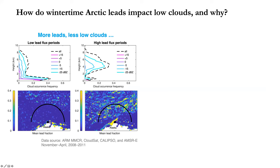We focus on a region north of Alaska to answer the key question: how do wintertime leads impact low-level clouds and why? Key observational results show that for the high-lead group, we observe less low-level clouds, defined as clouds below 2 kilometers. For the group with fewer leads, we observe much more abundant low-level clouds. So the observation tells us that more leads seem to result in fewer low-level clouds.